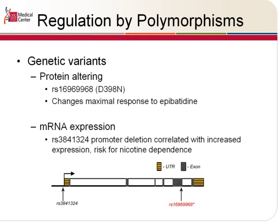More relevant to the research that we are doing is a promoter variant that was correlated with increased expression. This promoter variant is a deletion of about twenty-two nucleotides just proximal to the transcription start site. And not only that, but in a clinical association study, it was also associated with risk for nicotine dependence and I believe also alcohol dependence.